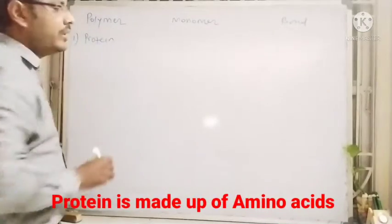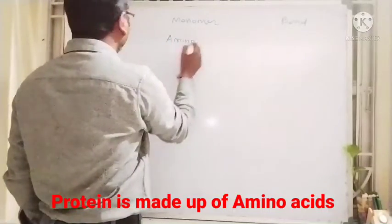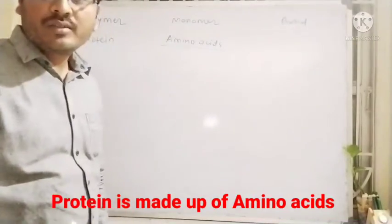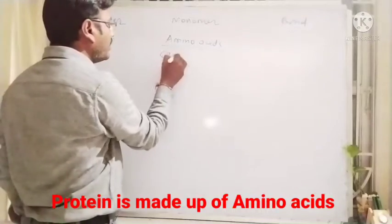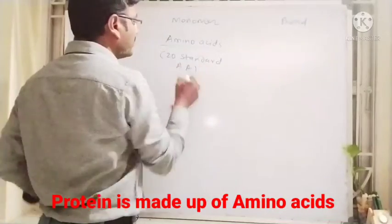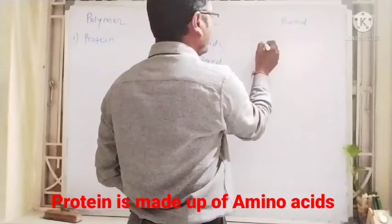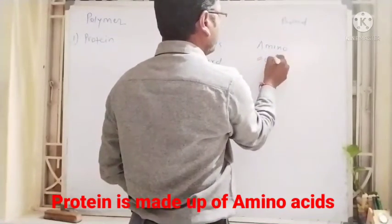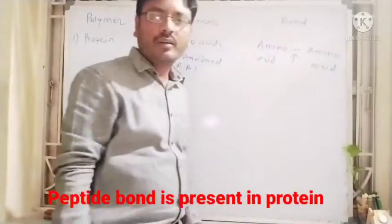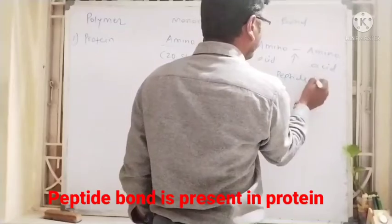First, the protein. Protein is made up of amino acids, so the monomer present in the protein is amino acids. As we know, there are 20 standard amino acids present. And the bond present between two amino acids is the peptide bond.